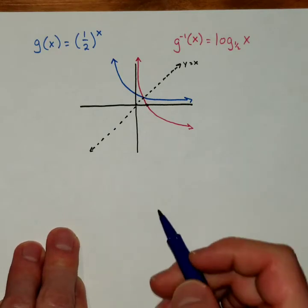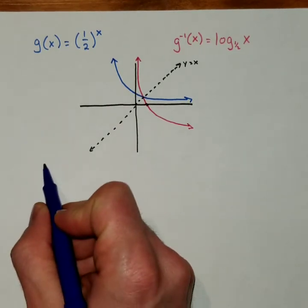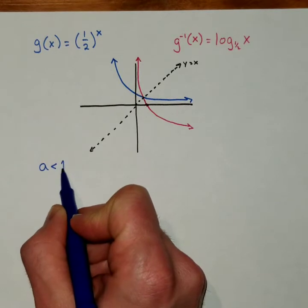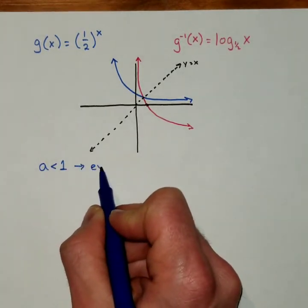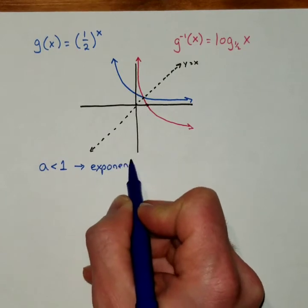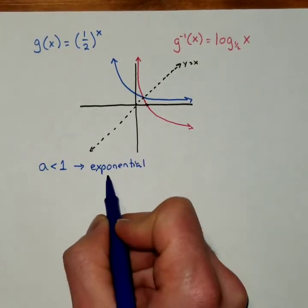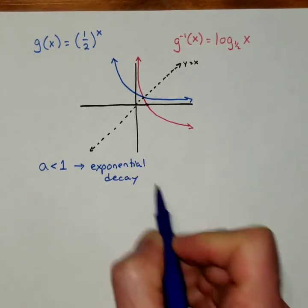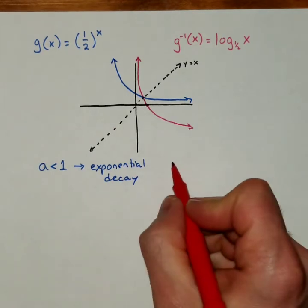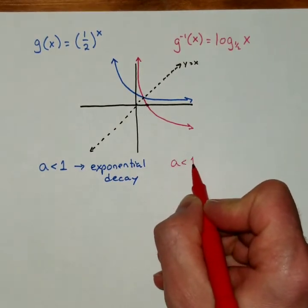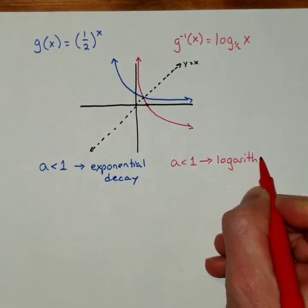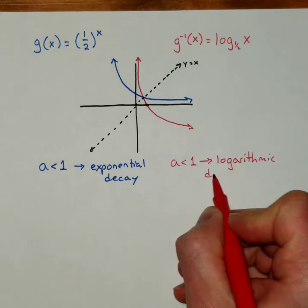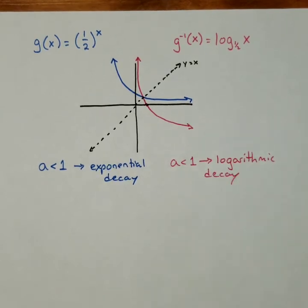And this logarithm is a decreasing function. So we have a logarithmic decay, just like we have an exponential decay. So just very briefly, when the a value is less than 1, you have exponential decay. And when the a value for a logarithm is less than 1, you would have logarithmic decay.